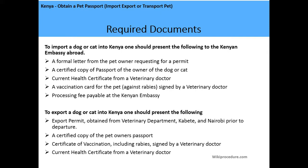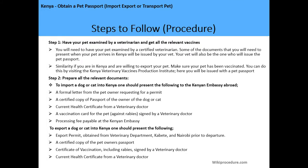To export a dog or cat from Kenya, one should present the following documents: an export permit obtained from the Veterinary Department in Kabete, Nairobi, prior to departure; a certified copy of the pet owner's passport; a certificate of vaccination including rabies signed by a veterinary doctor; and a current health certificate from a veterinary doctor.